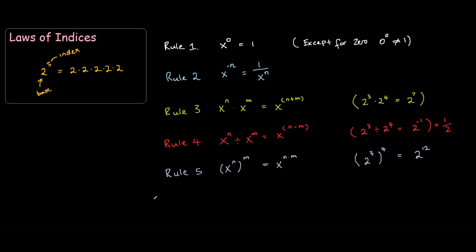And our last law, rule 6. If you have x to the power of n divided by m, this equals the m-th root of x to the power of n — you bring the n inside and the m outside as the root. So using an example, 2 to the power of 3 divided by 4 would be the 4th root of 2 to the power of 3.